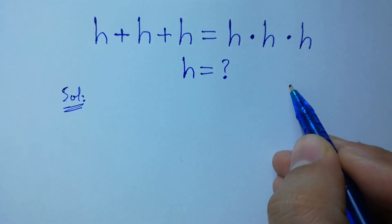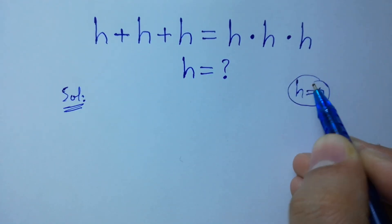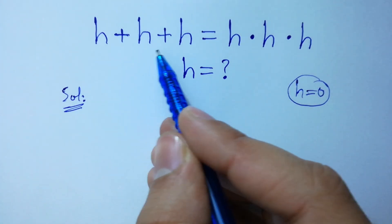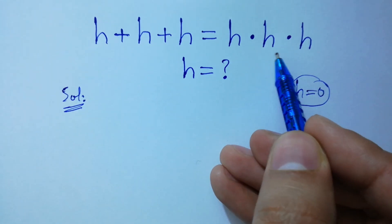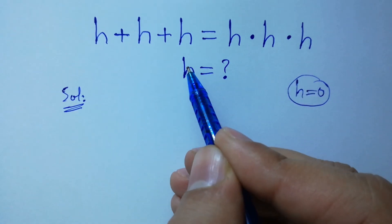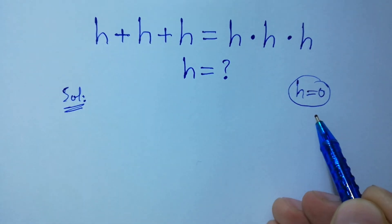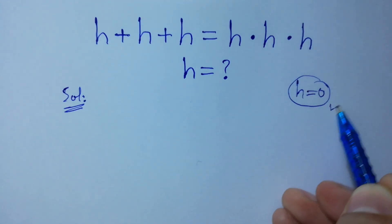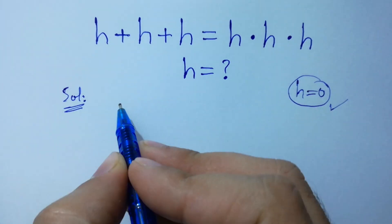If we put h equal to 0, we have 0 plus 0 plus 0 equal to 0 times 0 times 0, we get 0 equal to 0, which shows that the value of h is 0. But you should understand how h equals 0 — let's show this.